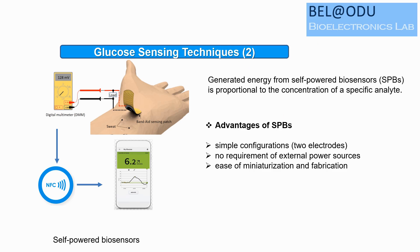Generating energy from a cell for a biosensor is proportional to the concentration of specific analytes. The basic principle of a biofuel cell involves anodic oxidation and cathodic catalytic reactions that generate power. This power is transferred to a signal processing circuit and displayed on a smartphone.